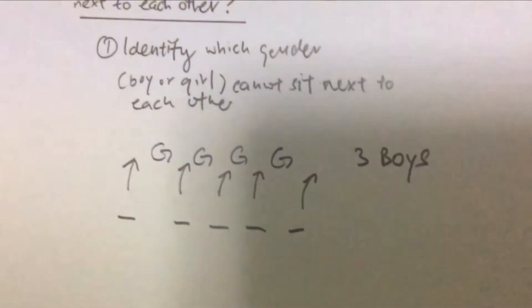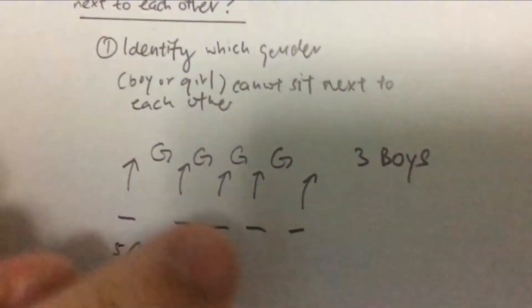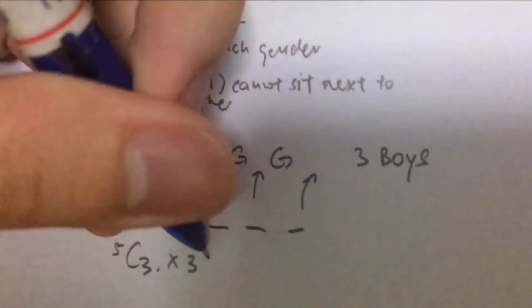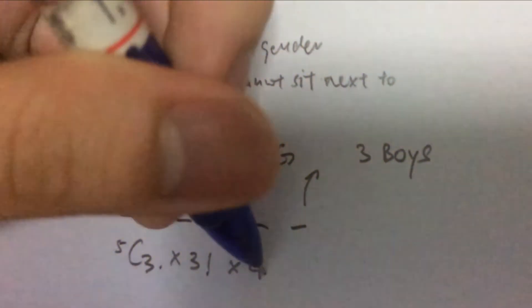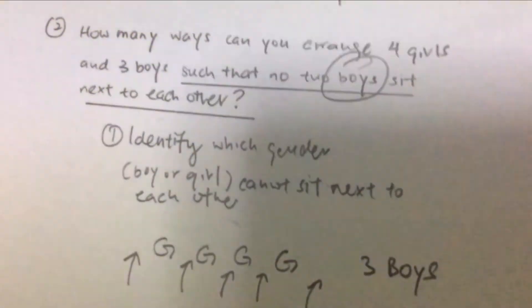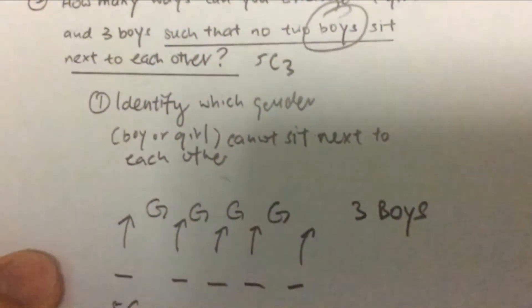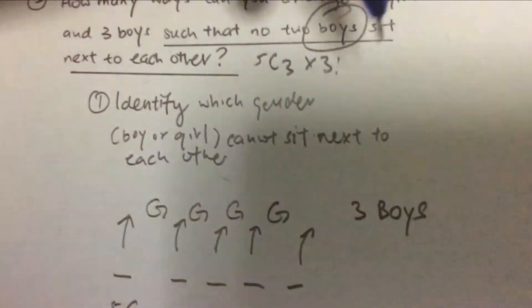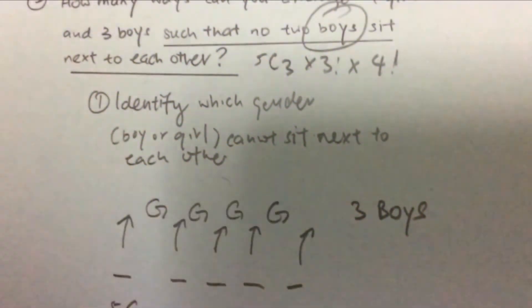Since we have five slots but only three boys, we need to choose three slots out of five. So the answer involves five choose three, representing the selection of three slots out of five. We then multiply by three factorial to arrange the boys within those chosen slots, and multiply by four factorial to arrange the girls among themselves. That gives the complete answer to question two.